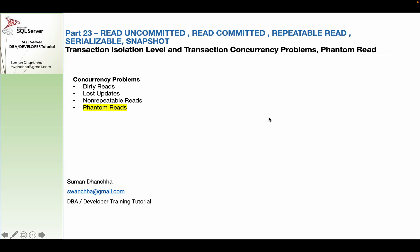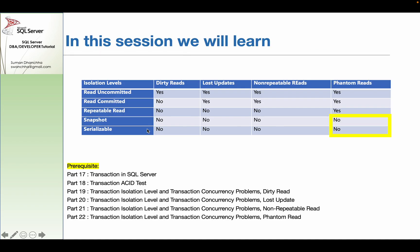Snapshot isolation level is a little different. In the database, there is no concurrency problem in Snapshot isolation. There is no concurrency problem in Serializable either.